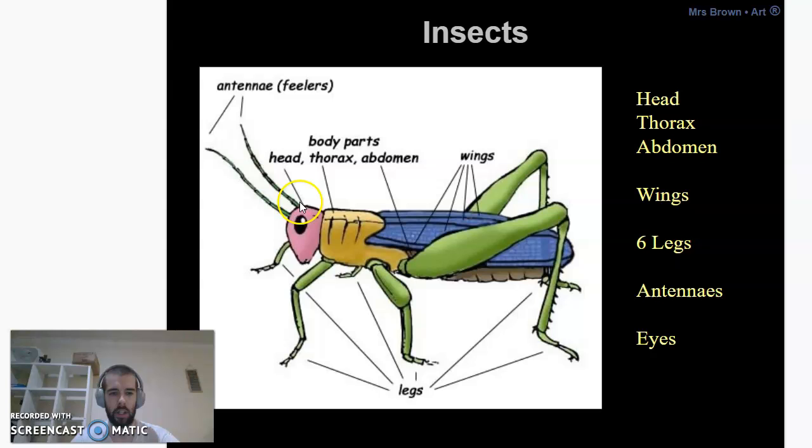But I really want a clear head, thorax, abdomen, and the six legs. I also want antennae. I think most bugs have antennae, but if you find a bug that doesn't have antennae, that's okay.